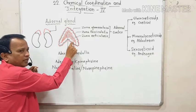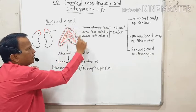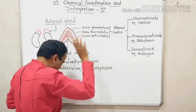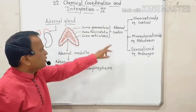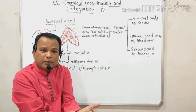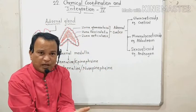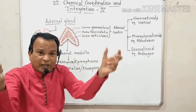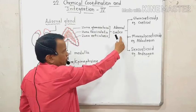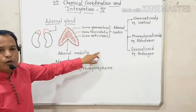The outer thick fibrous connective tissue covering of the adrenal gland — the outer boundary — is called the adrenal cortex. You have heard the word 'cortex' in many places: cortex means outer region. We have studied cerebral cortex in the brain, renal cortex in the kidney, ovarian cortex. Similarly, the outer boundary of the adrenal gland is the adrenal cortex, and the inner central region is called the adrenal medulla.